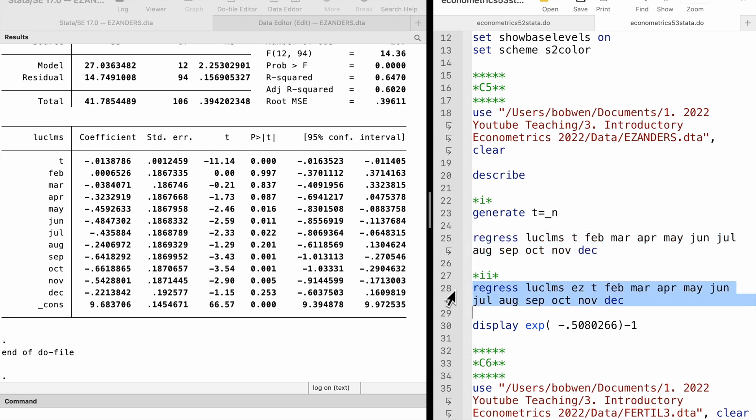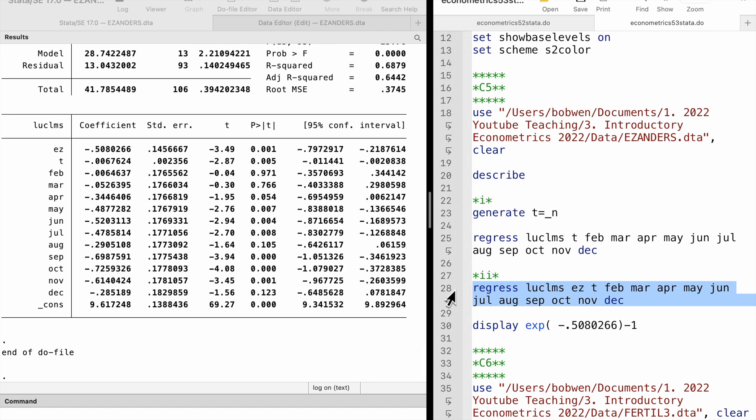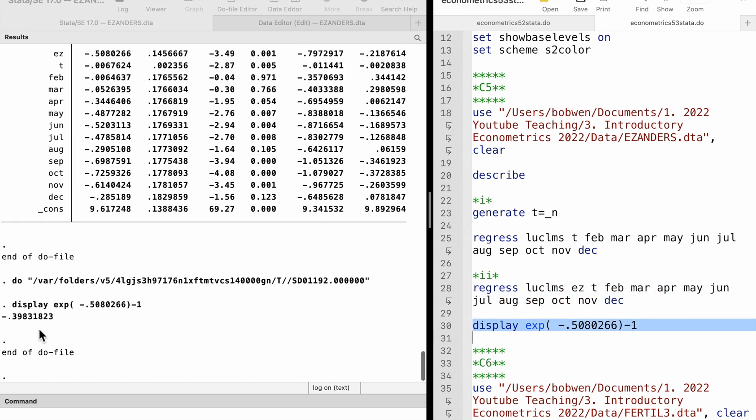In part 2, we add the dummy indicator enterprise zone to the model. The coefficient on the dummy variable, enterprise zone, is minus 0.508. It suggests that the enterprise zone decreases unemployment claims by 39.8%.